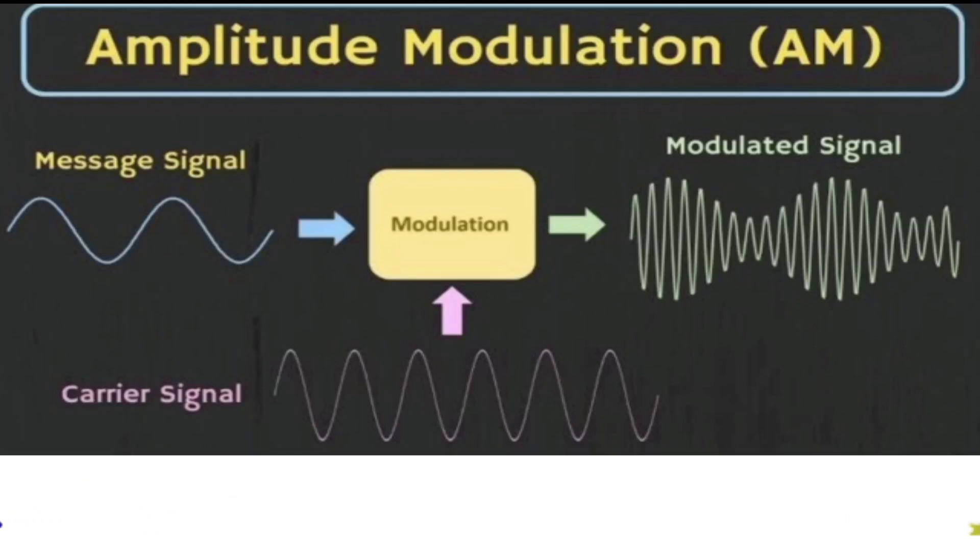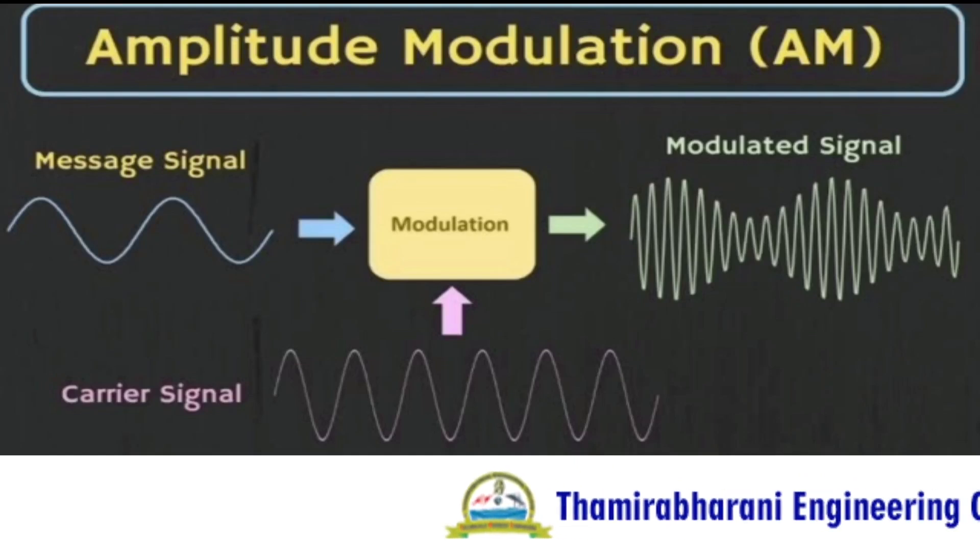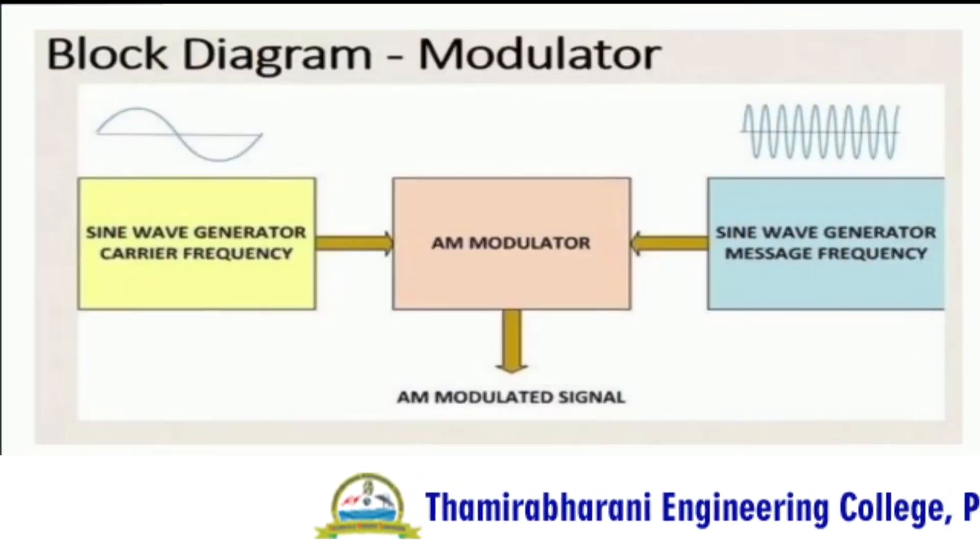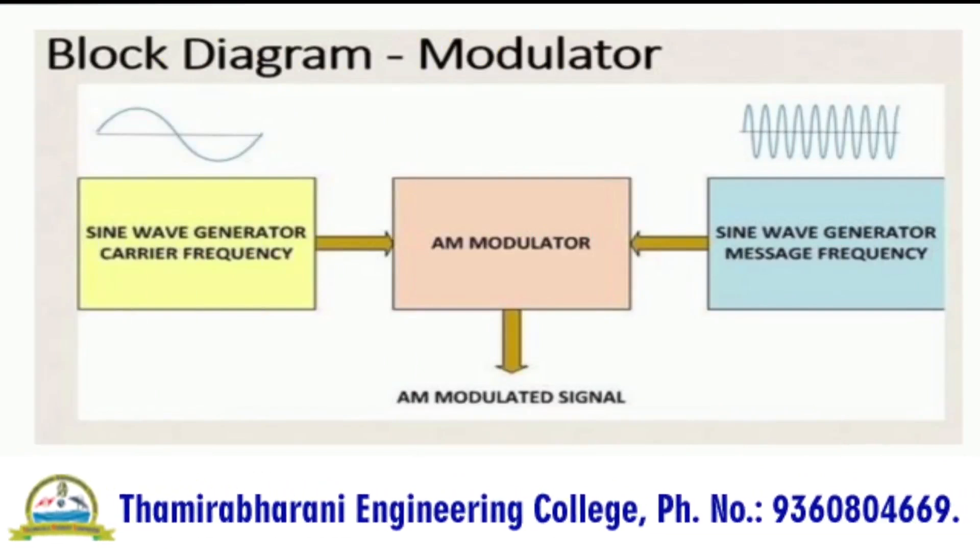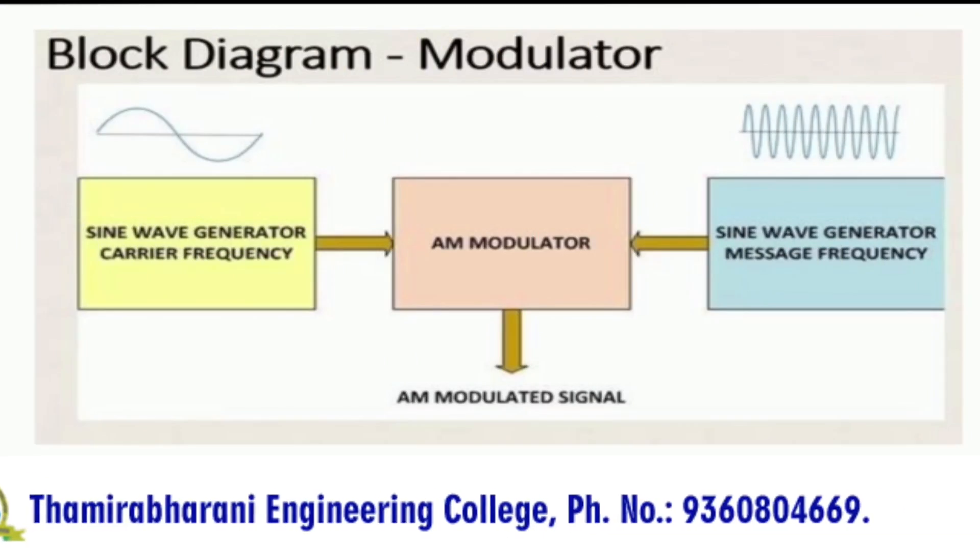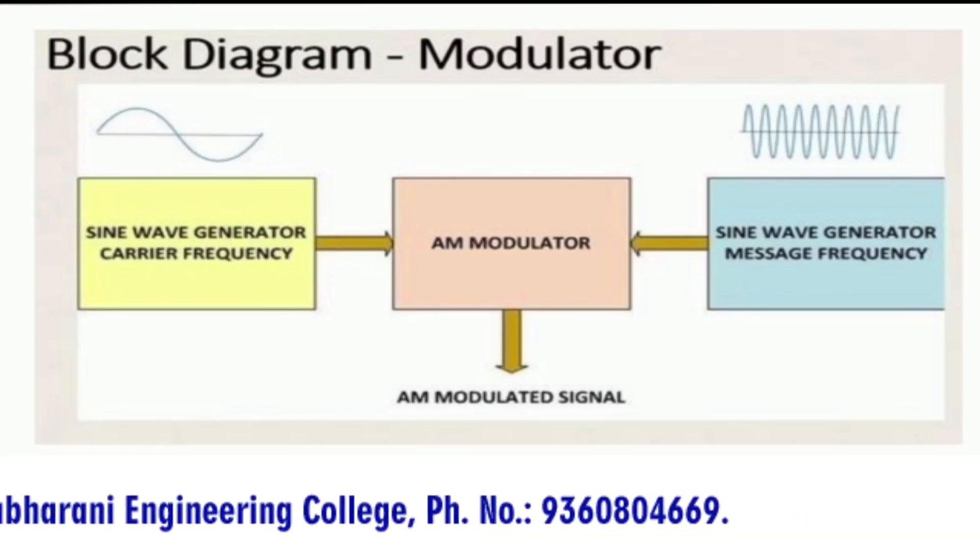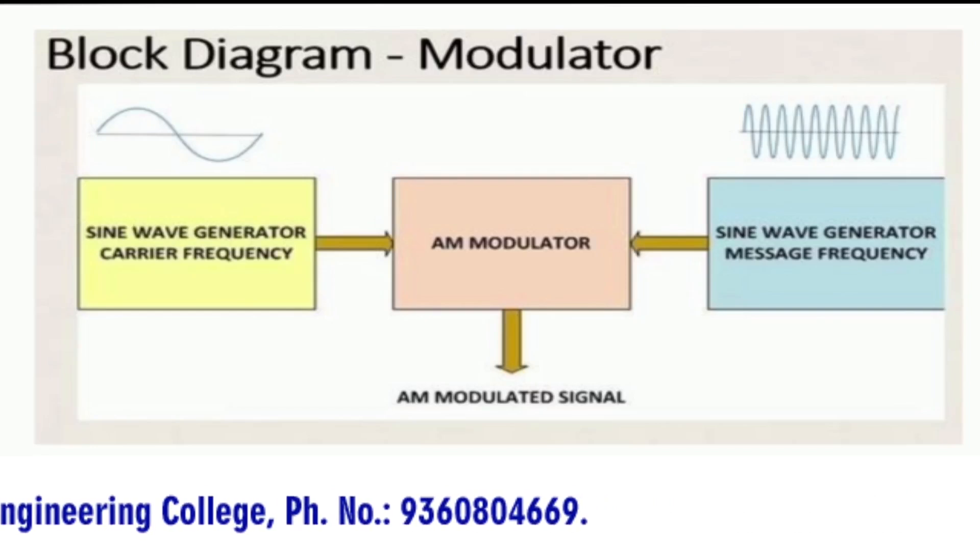Modulation is the process generally used for radiating low frequency audio signals over long distances. Here, the low frequency audio signal is superimposed with the high frequency carrier wave. In Amplitude Modulation, the amplitude of the high frequency carrier wave changes in accordance with the intensity of the signal, but the frequency of the modulated wave remains the same.